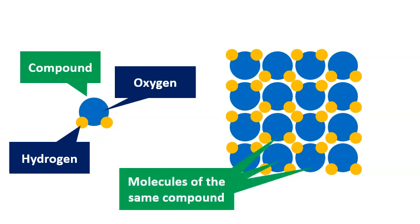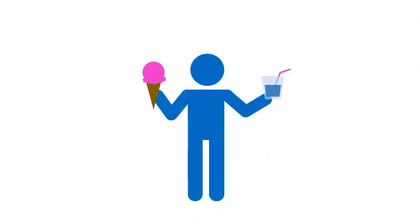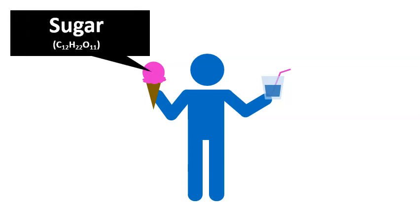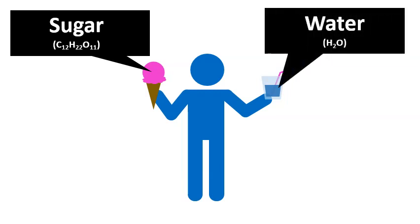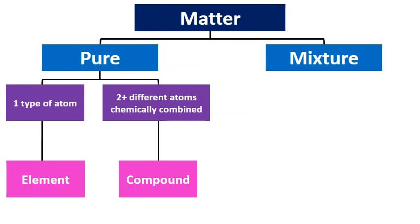If we take sugar, for example, in our ice cream cone, sugar is always 12 carbons, 22 hydrogens, and 11 oxygens. Just like our water was always two hydrogens to one oxygen. We can have pure sugar and pure water, and then we can mix those together and get something that is impure.